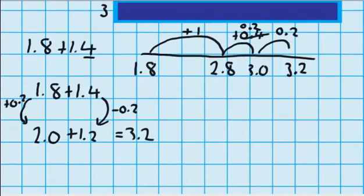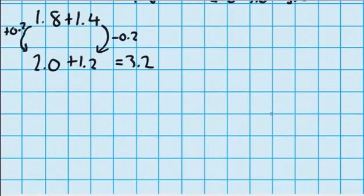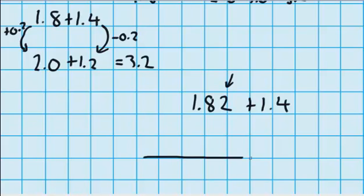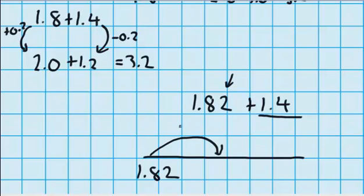Now I'm just going to change that question slightly and we'll see what happens. Let's imagine that in the morning I eat 1.82 chocolate bars and I still have 1.4 in the afternoon — so the difference is I've managed to have 2 hundredths, a very small amount more. Let's go straight into using a number line. I'm going to put 1.82 on it and jump up 1.4, doing exactly the same as last time — jumping up one whole first. 1.82 plus 1 equals 2.82.